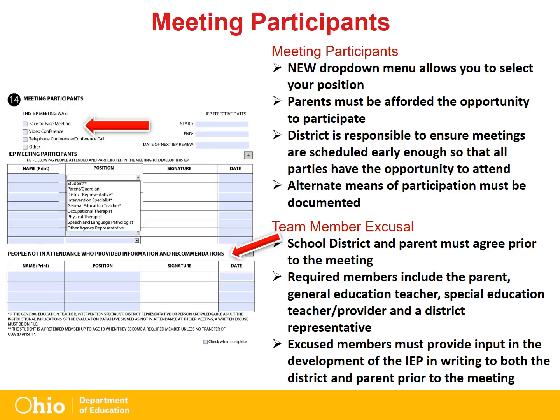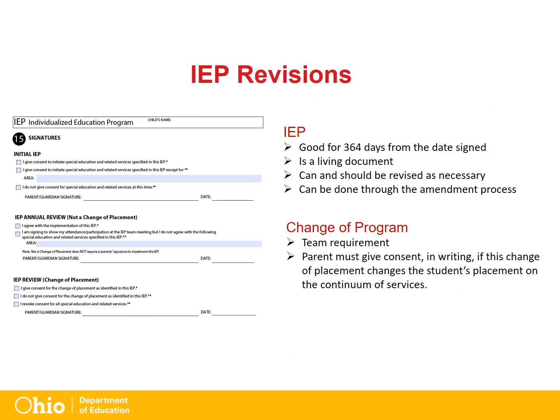If this is an initial IEP meeting, the parent must sign to implement services. The parent must receive the PR01, summarizing the events of the IEP meeting, along with the procedural safeguard notice prior to services beginning for that student. Districts need to remember that while an IEP is in effect for 364 days from the date signed, it is a living document and can and should be revised as necessary. Any member of the team may request an IEP meeting to revise.